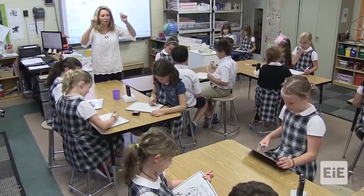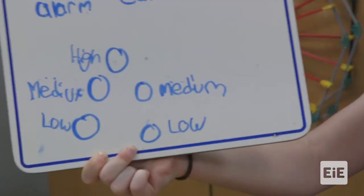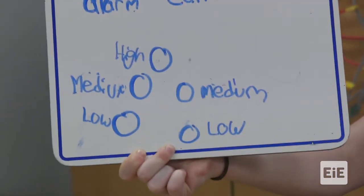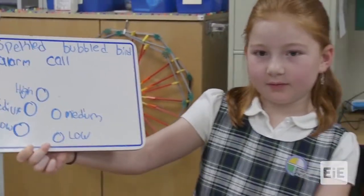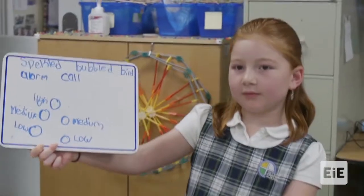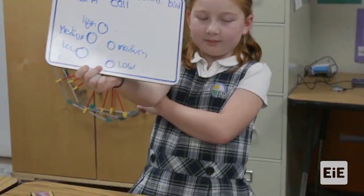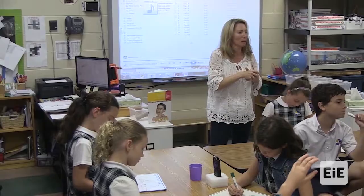I'm going to have team one hold up your boards — can you explain how you did your calls? It went low, medium, high, medium, low. Each dot represented the pitch — it was almost like a graph, going from lower down at the bottom to higher, which was closer to the top.